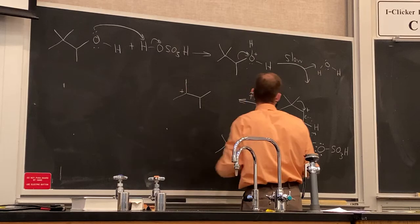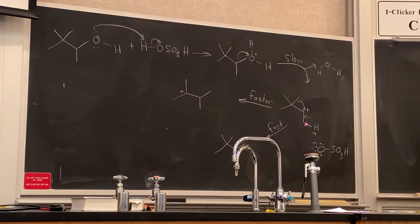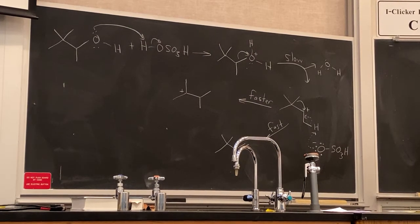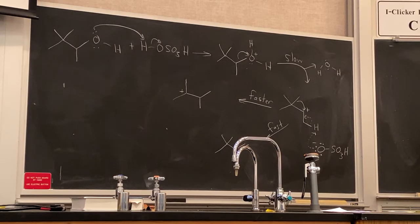We have gone from a secondary carbocation to a tertiary carbocation by migrating one of the methyl groups from this quaternary carbon. That has to be faster than deprotonation because in general, if you can rearrange a carbocation to a more stable carbocation by shifting one of the groups on an adjacent carbon, that rearrangement will be faster than anything else that can happen to that carbocation.